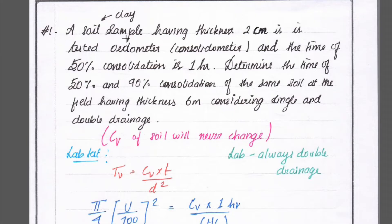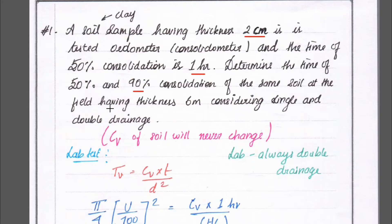The problem is: a clay soil sample having a thickness of 2 centimeters is tested in an oedometer (consolidometer), and the time for 50 percent consolidation is 1 hour. Determine the time for 50 percent consolidation and 90 percent consolidation of the same soil in the field, having a thickness of 6 meters, considering single and double drainage.